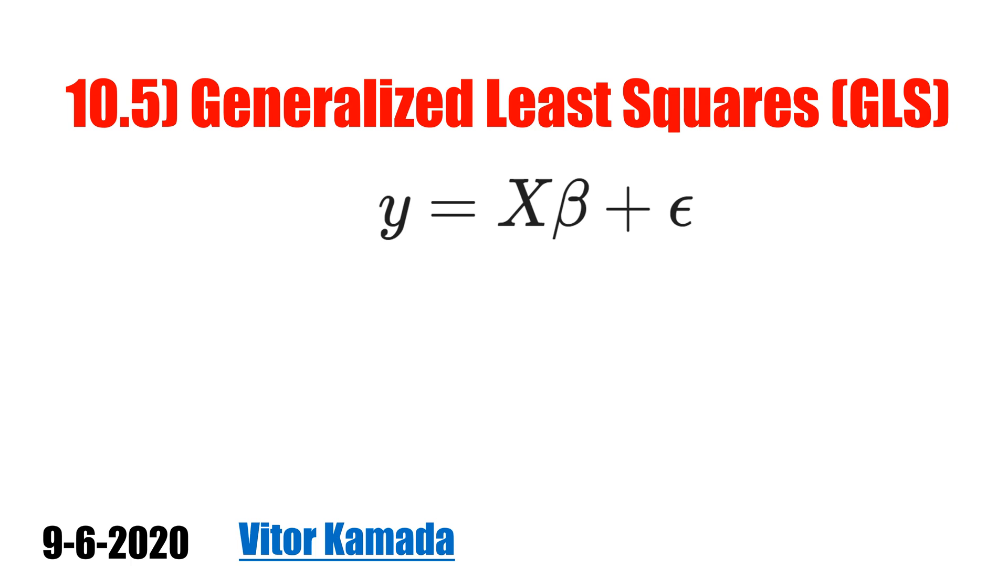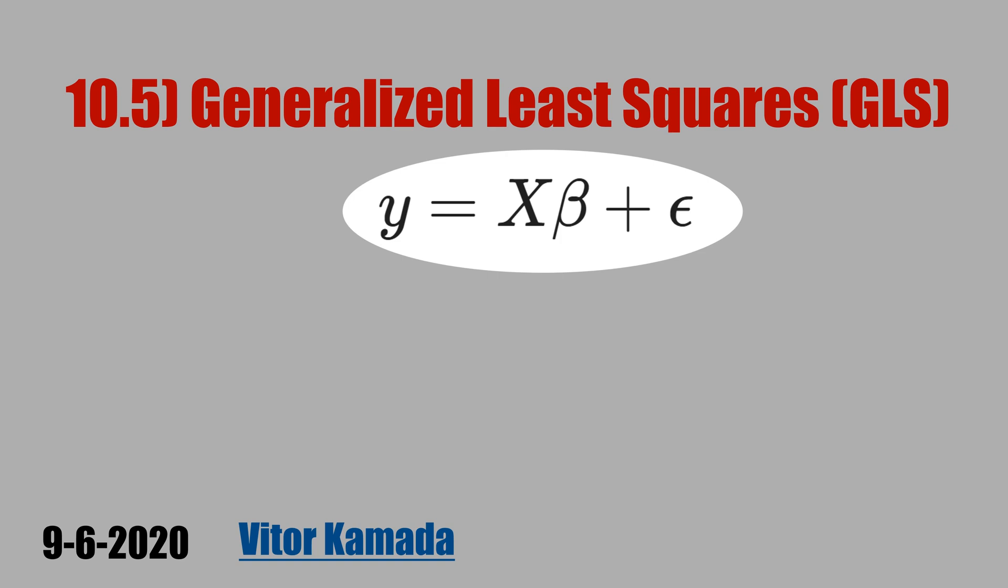In this video, let's learn what is generalized least-square. Let's start from this regression here. X is the vector of explanatory variables, and beta is the vector of the slope of X.